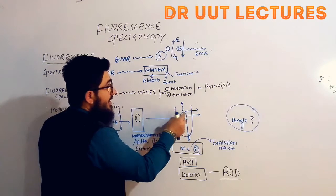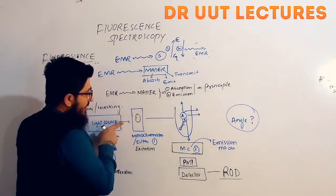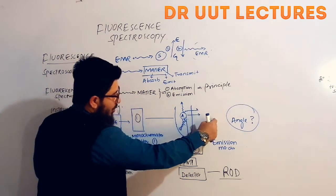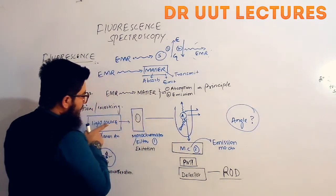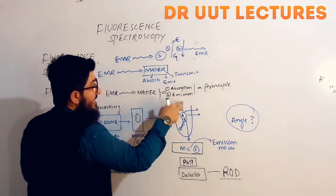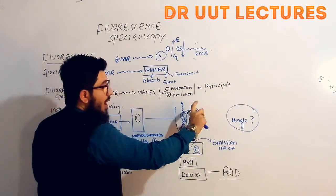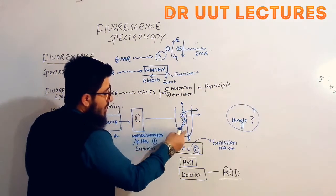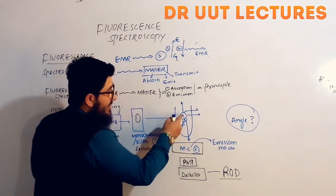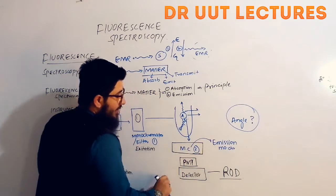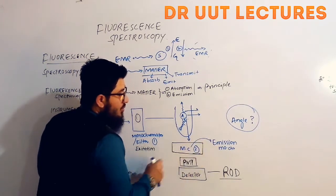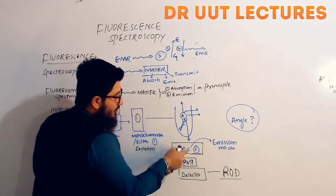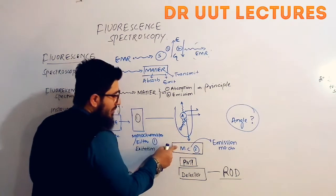These emitted radiations go in different directions. To avoid mixing the radiation from the atoms with radiation from the source, we place the detector at a 90-degree angle. If the detector were placed parallel to the cuvette, radiations from both the light source and the excited atoms would mix together at the detector. By placing it at 90 degrees, only the radiation from the excited atoms reaches the detector. A second monochromator — the emission monochromator — is placed to filter these emitted radiations, allowing only emitted radiation from the atoms to pass through.